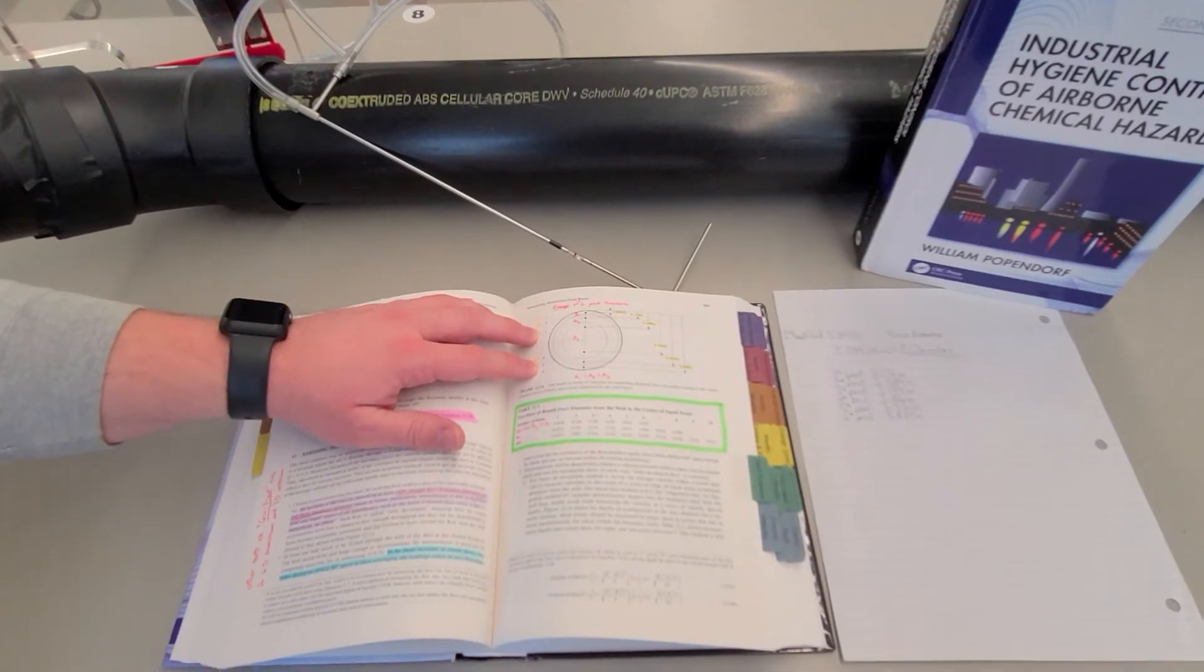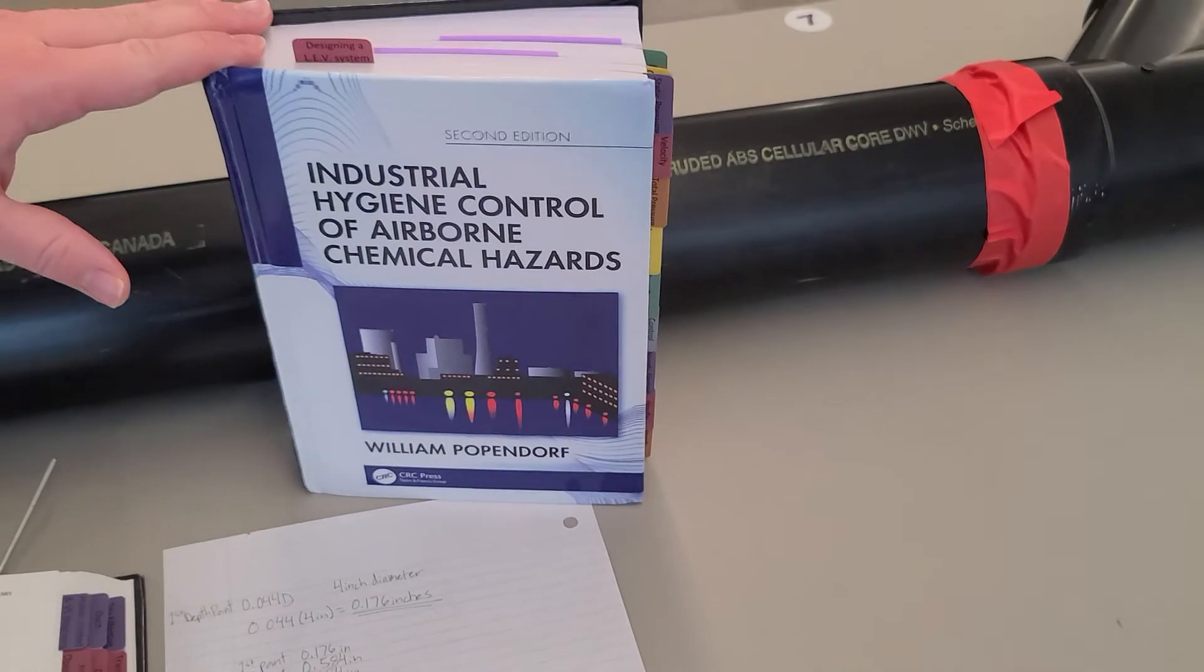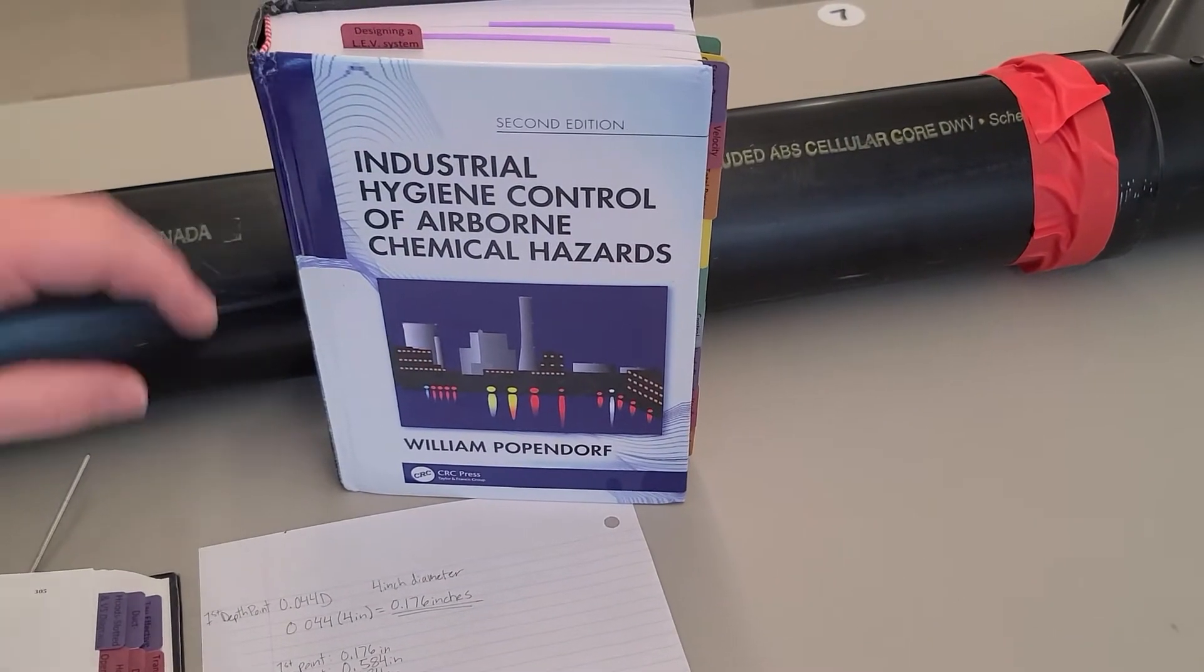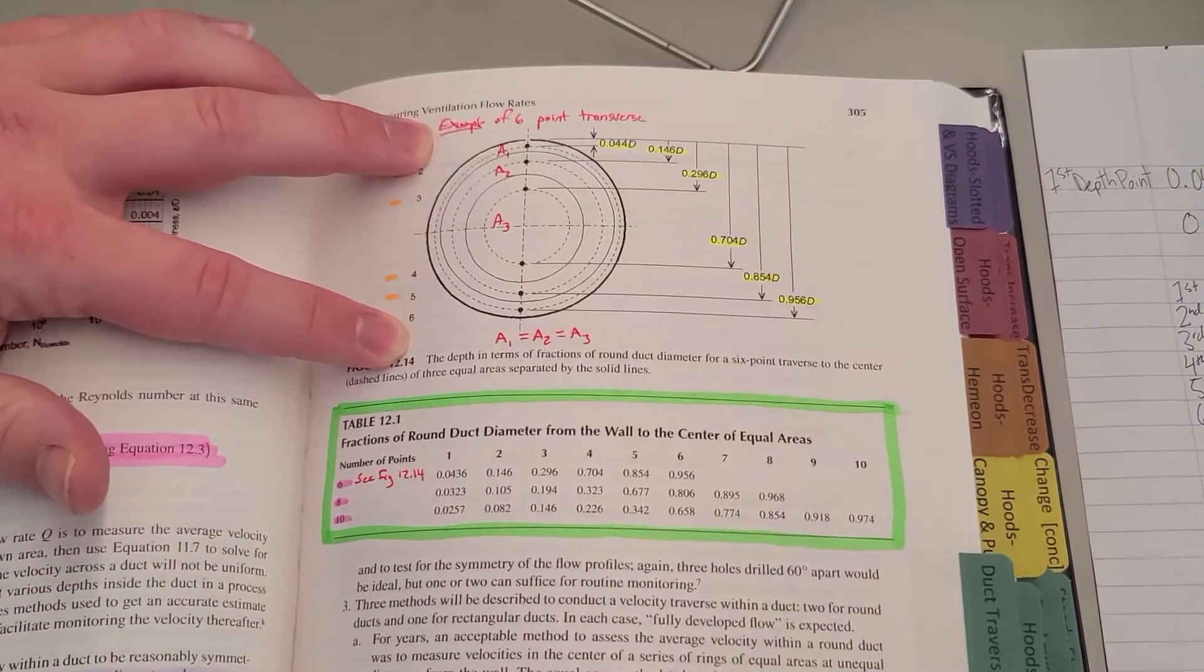How we're going to do this is we're going to use this diagram from this textbook, Industrial Hygiene Control of Airborne Chemical Hazards by William Popp and North, 2nd edition. Returning to the diagram, here it shows how to properly conduct a duct traverse.